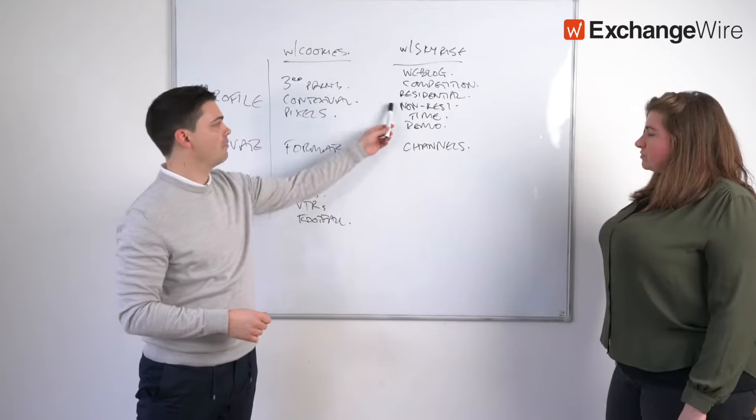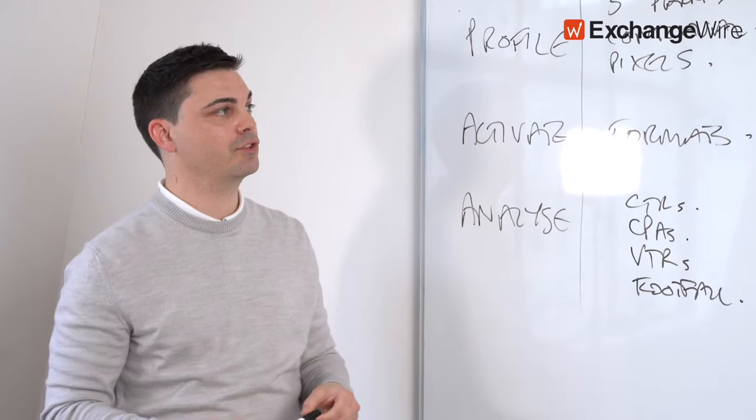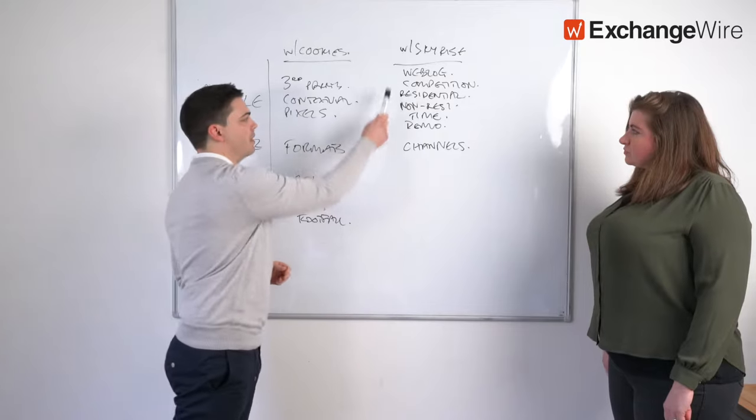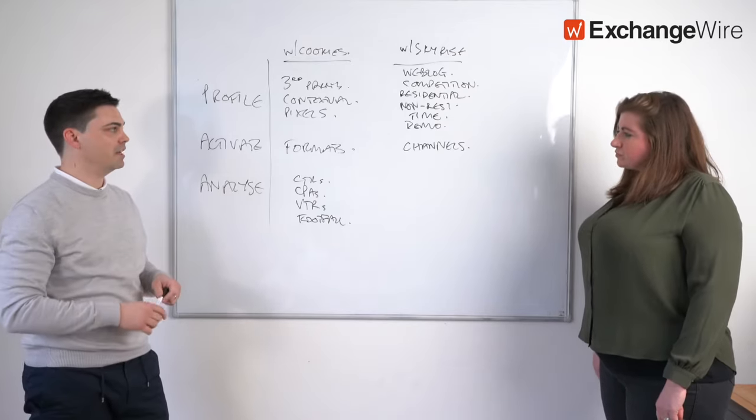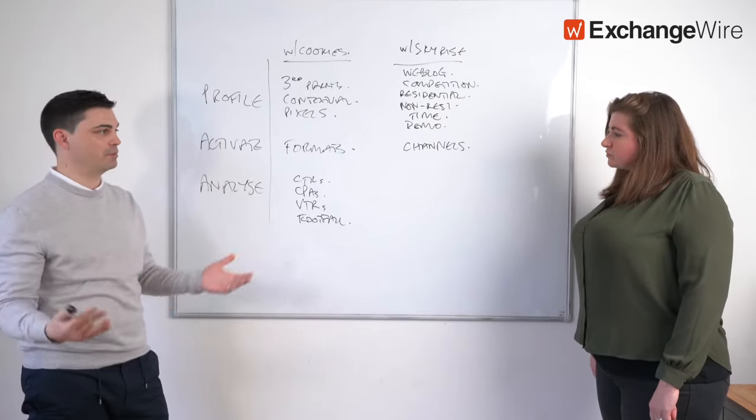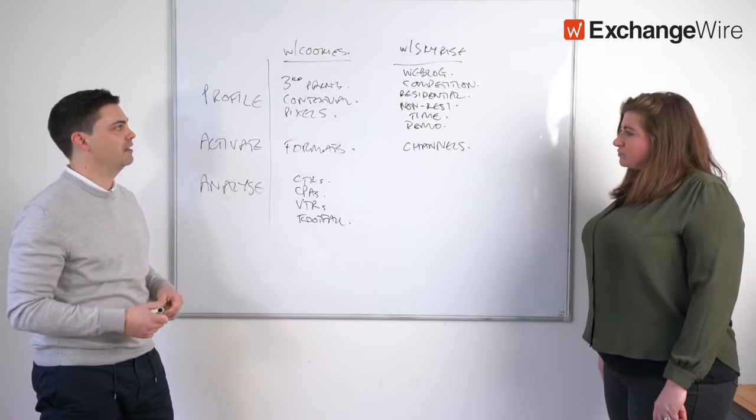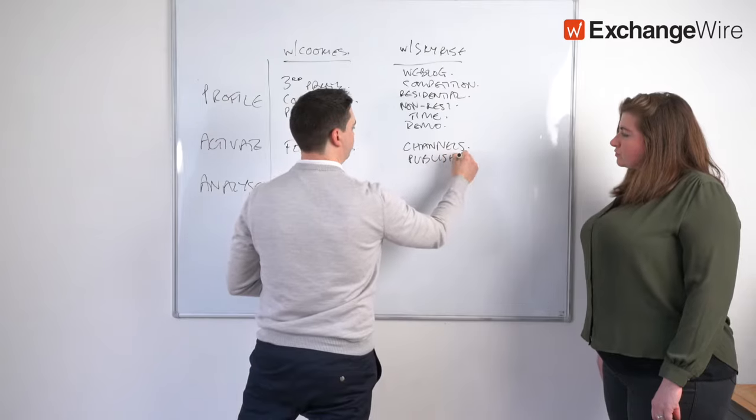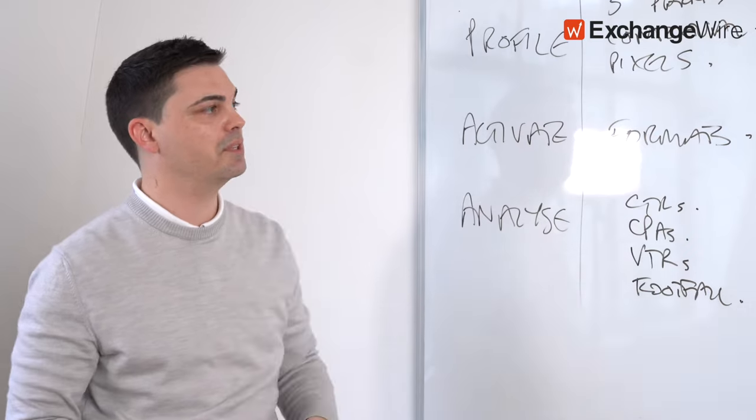For display and video, for example, we'll know exactly what websites they're consuming display and video on. We know exactly which ones are selling ads, so we can go and reach them there. For out of home, you've got non-residential, you've got time. So you can say, where are they going? When are they doing it? And then obviously buy the screens in the proximity accordingly. You know, TV, you've got weblog, you've got residential, you've got time. So you can say, we know where they live, what TV region they're in. We know what time they're typically at home.